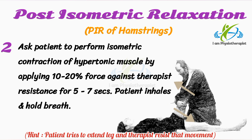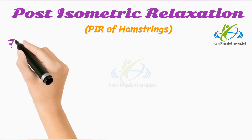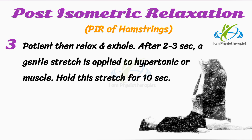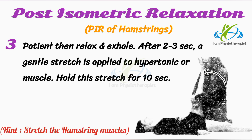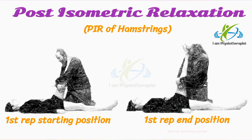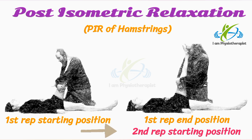The patient should inhale during this effort and hold their breath. After the isometric contraction, the patient is then asked to relax and exhale. After 2–3 seconds, a gentle stretch is applied to the hypertonic or involved muscle and held for about 10 seconds. Starting from this new barrier, the procedure can be repeated 3–5 times. Wait about 20 seconds before starting the next session.